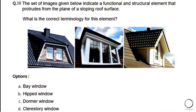Next: The set of images below indicates a functional and structural element that protrudes from the plane of a sloping roof surface. What is the correct terminology for the element? Options: a) bay window, b) hip window, c) dormer window, d) clerestory window. The right answer is option C — dormer window. A window that protrudes out from a sloping roof is always a dormer window.